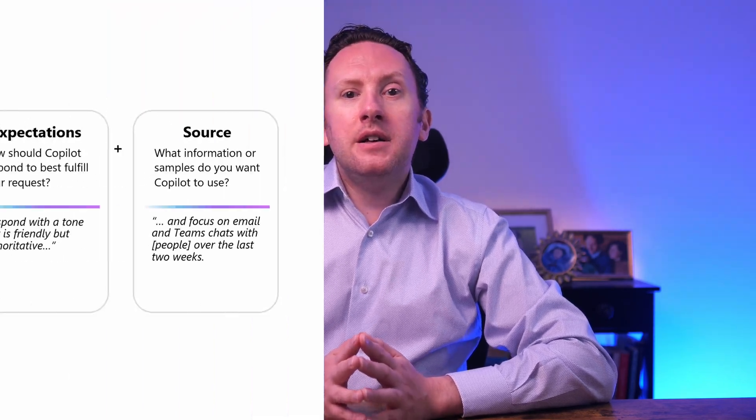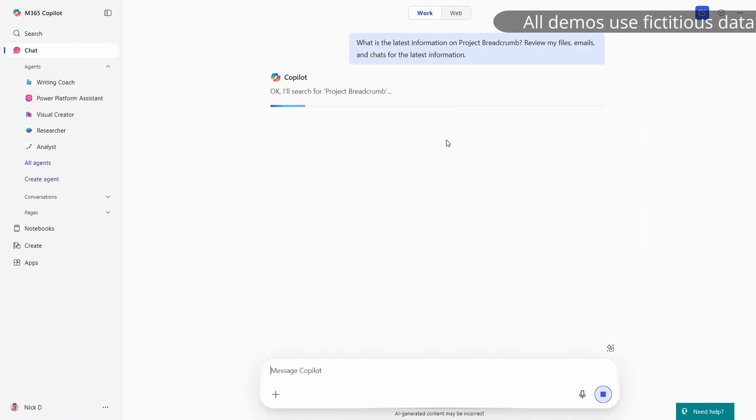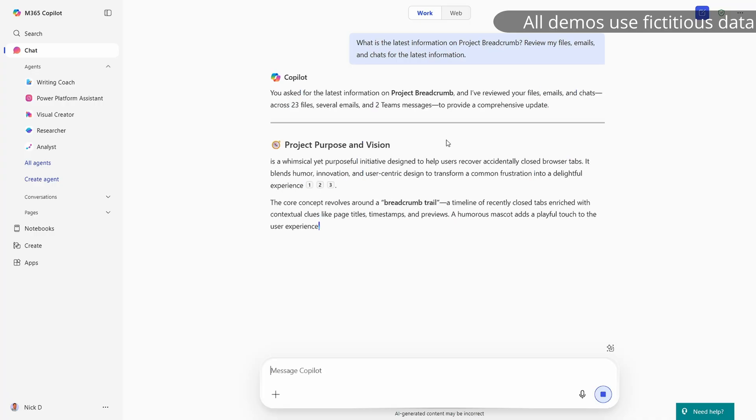First, I want to talk about prompts. Effective prompting can be a really important part of getting started with Copilot, although arguably the conversational powers of newer models are quickly reducing the primacy of this skill. Still, you've probably seen some version of this slide focusing in on the important parts of a prompt: your goal, context, source, and expectations. But once you've created a useful prompt, what do you do with it?